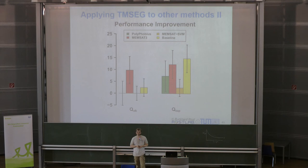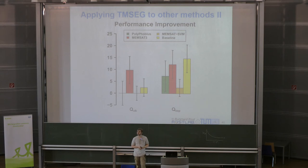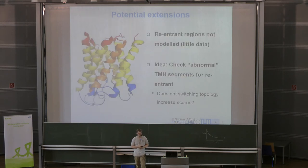These modular improvement results are on the 41 transmembrane proteins from the blind test dataset.